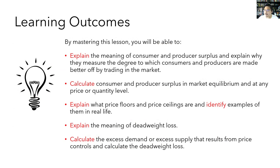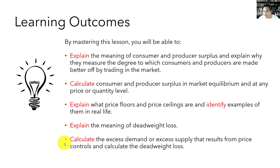Here are our learning outcomes for today. By mastering this lesson, you should be able to: explain the meaning of consumer and producer surplus and why they measure the degree to which consumers and producers are made better off by trading in the market; calculate consumer and producer surplus both in market equilibrium and at any price or quantity level; explain what price floors and price ceilings are and identify examples of them in real life; explain the meaning of deadweight loss; and calculate the excess demand or excess supply that results from price floors or price ceilings, and calculate the deadweight loss that results from them.